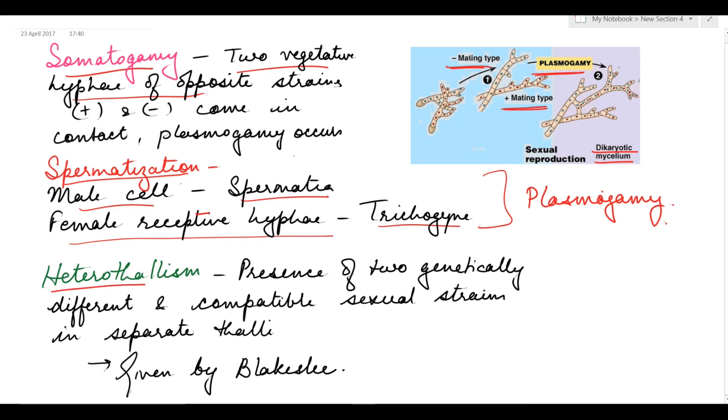Fungi show heterothallism, meaning there are two types of thallus which are genetically different and compatible sexual strains. Heterothallism was discovered by Blakeslee. It is just like the dioecious condition seen in higher organisms.